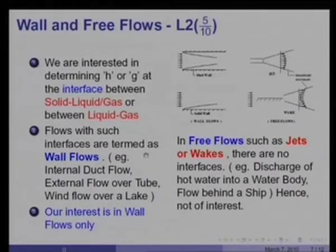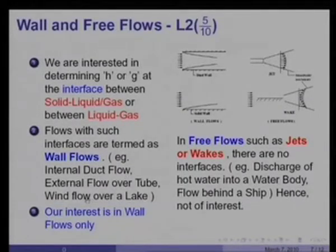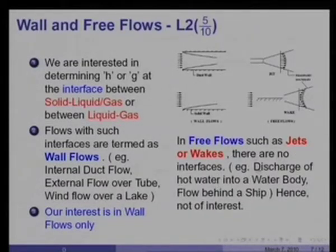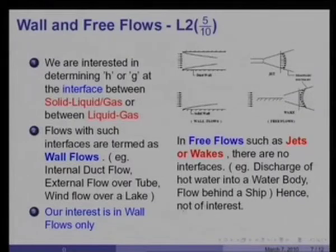Flows with interfaces are termed wall flows — examples include internal duct flows and external flow over a tube or wind flow over a lake. Our interest is in wall flows, not in free flows such as jets and wakes, because there are no bounding interfaces in free flows. Examples of free flows — jet discharge of hot water into a water body, flow behind a ship — are not of interest here.